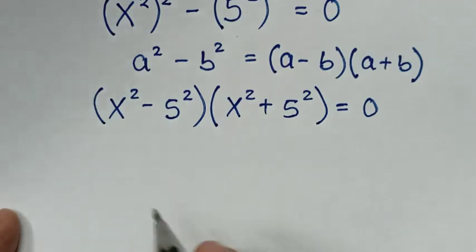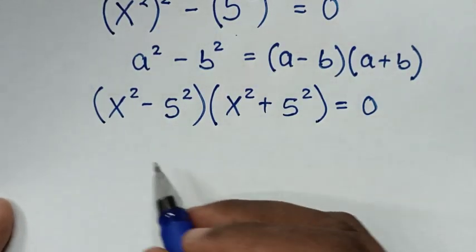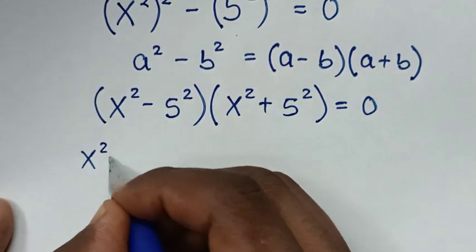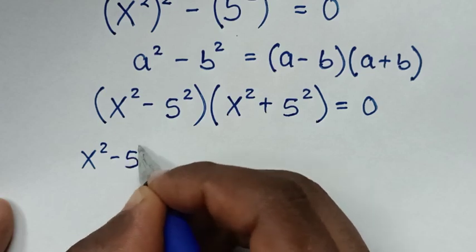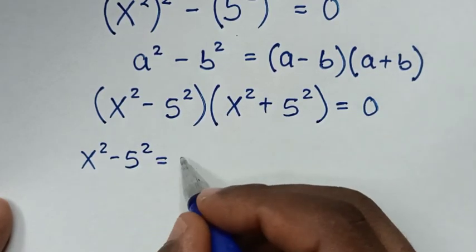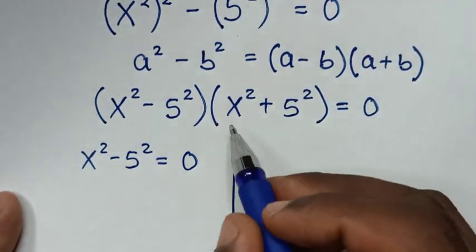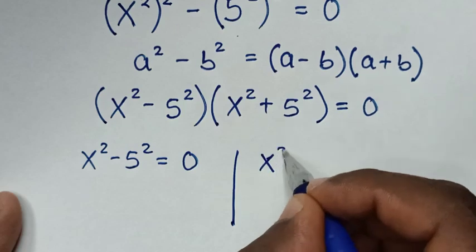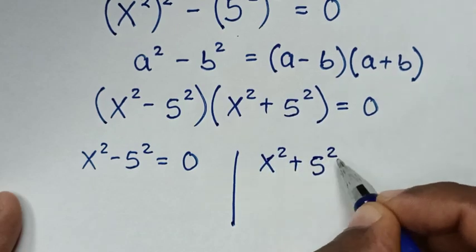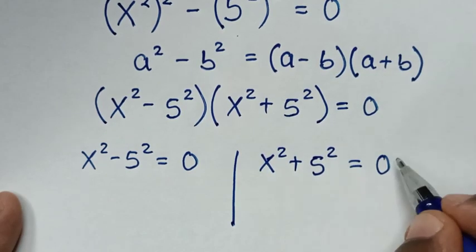From here we have two factor equations. The first solution gives us x² minus 25 equals 0, and the second solution gives us x² plus 25 equals 0.